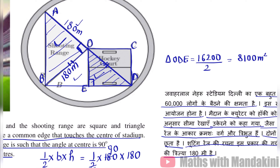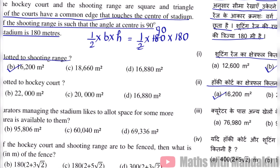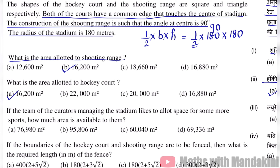Sirf ek ODE ka shetrifal 8,100 meter square hai. Jo ODE ka shetrifal hai, vohi humara triangle OCD ka shetrifal bhi hoga, kyunki humara jo yeh diagonal hai, vikarn jo hai vurgh ka, woh usse dho barabar bhaago mein baatta hai. Toh OCD ka shetrifal bhi aa gaya 8,100 meter square. Toh total vurgh ka area kya ho jayega? Total vurgh ka area hoga jab hum in donoh ko add kar denge: 8,100 plus 8,100 equals 16,200 meter square. Toh humara hockey court ka shetrifal 16,200 meter square aa gaya.